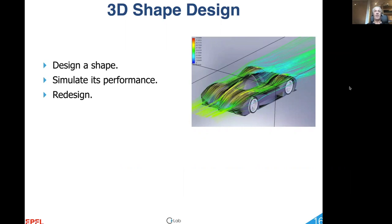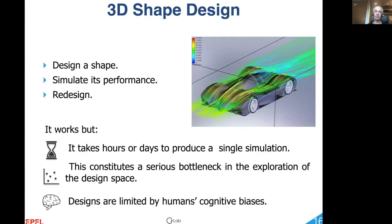If the results are not what was hoped for, which is often the case, the model is modified and the simulation is run again. This clearly works, our cars move and our planes fly, but it is slow, in large part because running each individual simulation takes a lot of time and so does redesigning the models.